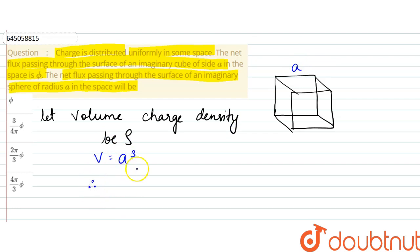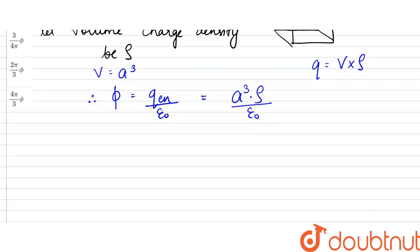Therefore, according to Gauss's law, flux is equal to Q enclosed by epsilon, which would be equal to charge would be equal to volume into charge density, volume charge density. So it would be A cube into rho by epsilon naught. This would be the flux.